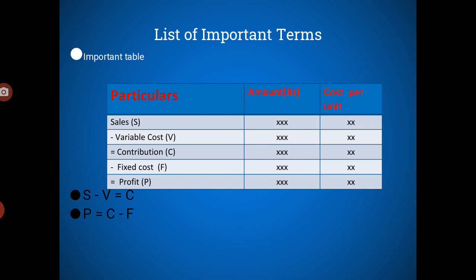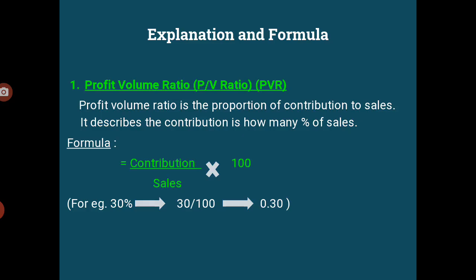This is the most important table. Moving further — now explanation and formulas. There are different formula headings. The color coding used: the fluorescent green color represents the formula heading, and the white color represents the explanation. Starting from the first formula — Profit Volume Ratio, also called PV ratio. These are short forms for the same.